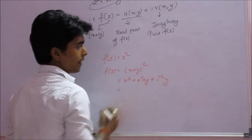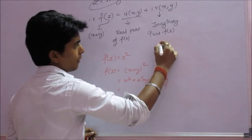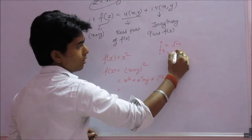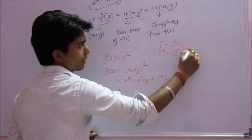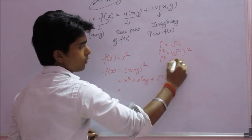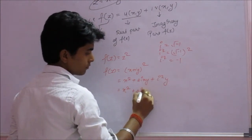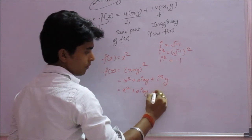The value of i squared is given by i equals square root of minus one. Therefore i squared equals square root of minus one the whole square. Therefore i squared equals minus one.